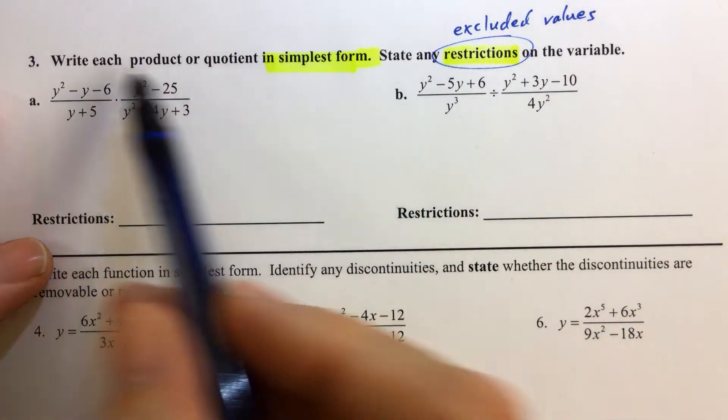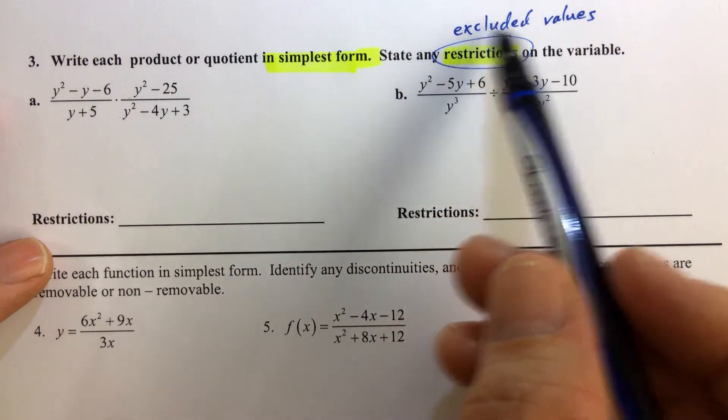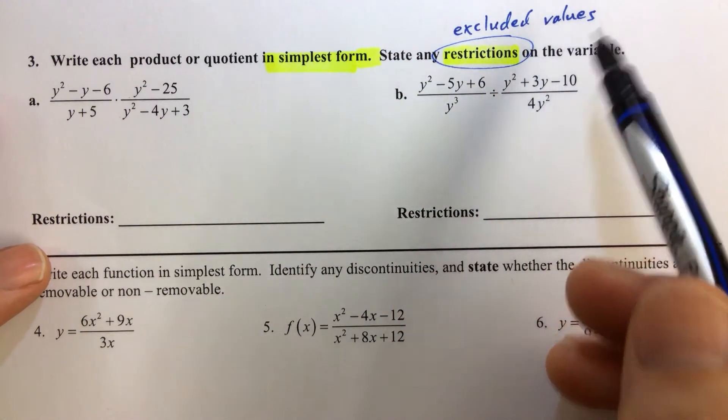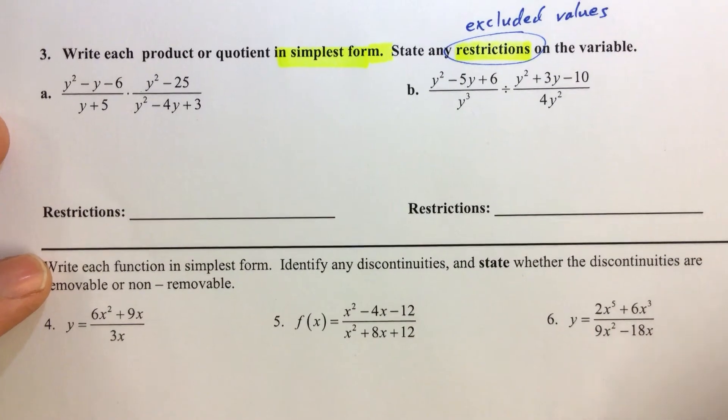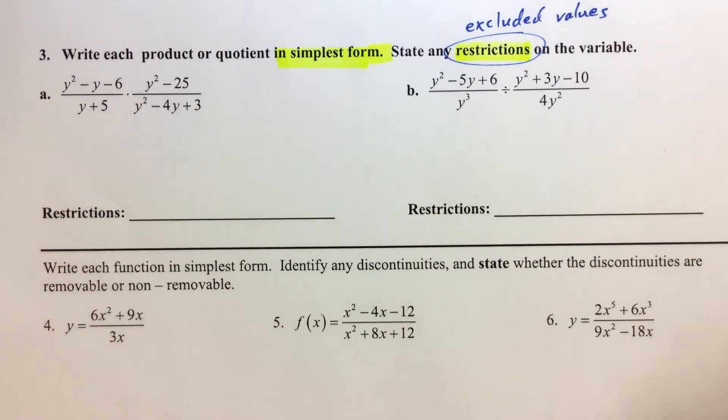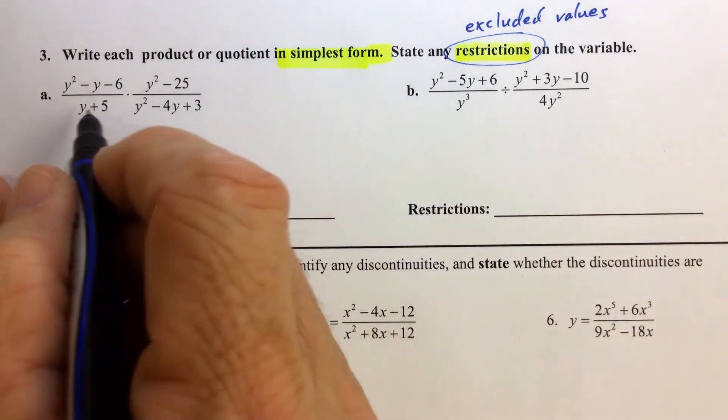Our objective for number three is to write the product or quotient in simplest form, stating any restrictions. We talked about excluded values, so we're going to call them restrictions from now on. I think that's a better description of what we're looking for - restrictions on the variable. Let's talk about those first.